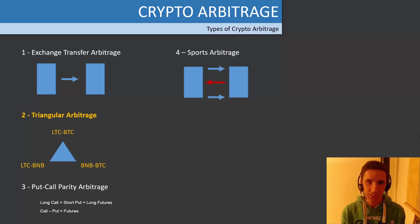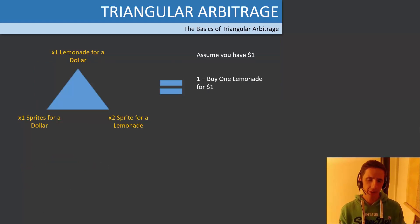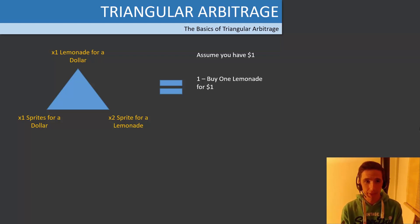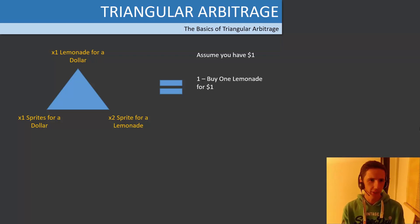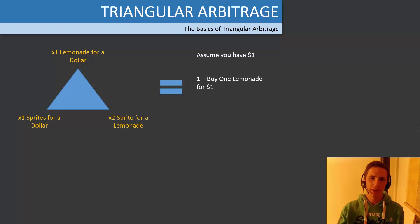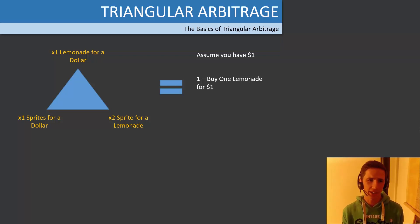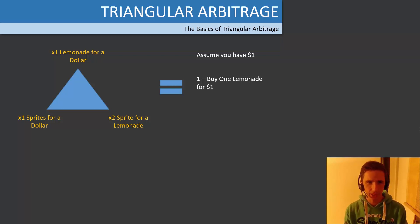Now let's get into the foundations and fundamentals of triangular arbitrage. Picture that you're walking into a room and there are three tables. You go to the first table and they say, 'I'm selling lemonade for a dollar.' The next table says, 'If you bring us a lemonade, we'll give you two sprites.' The final table says, 'I'll let you exchange one sprite for one dollar.' These tables aren't talking to each other — picture them like order books, each trading based on their own supply and demand.